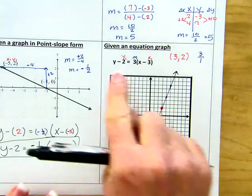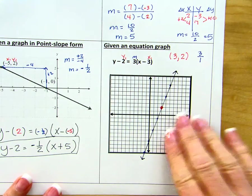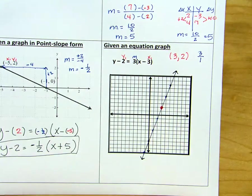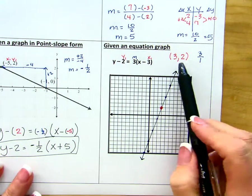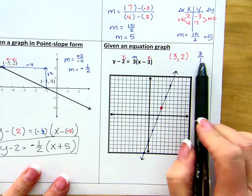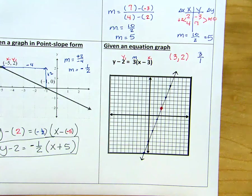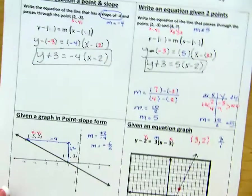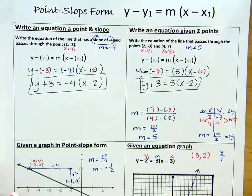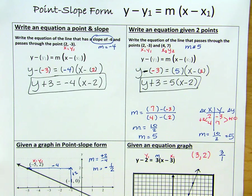So here I've been given an equation, and I was able to graph the line, because the equation was in point-slope form. So I was able to pull out that point and that slope from the equation. So here are four examples of point-slope form.